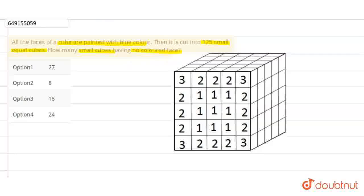Here is a cube. It has been painted with blue color, then it has been cut into 125 small equal cubes. So we are asked, how many cubes have no color on any surface?